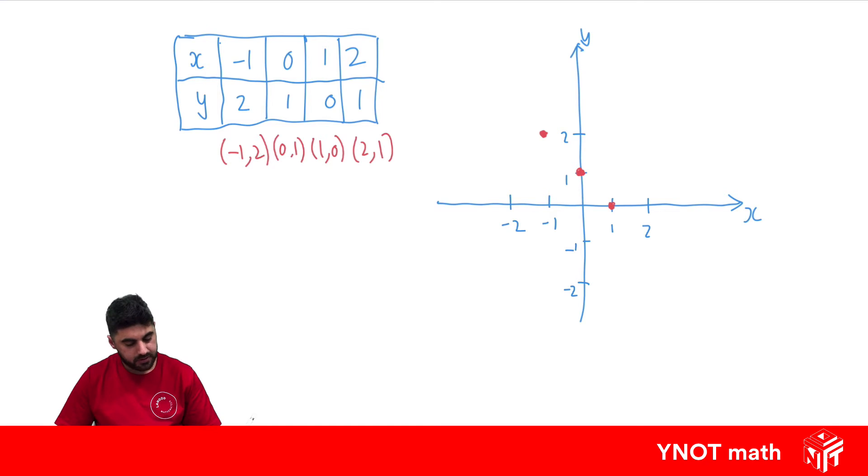And then you can see that pattern does form a straight line and we can join them up and that pattern would go on forever and there's our line that we can draw from a table of values.